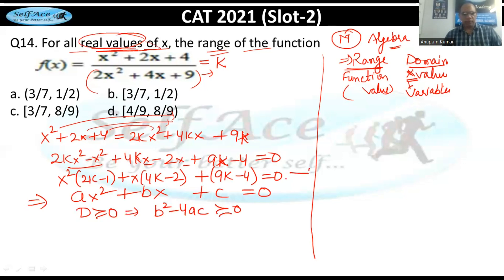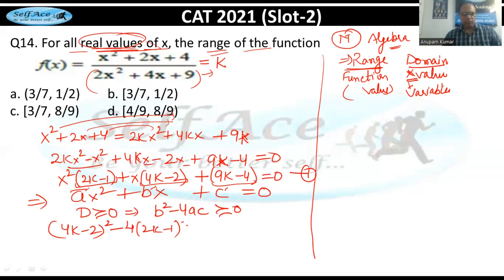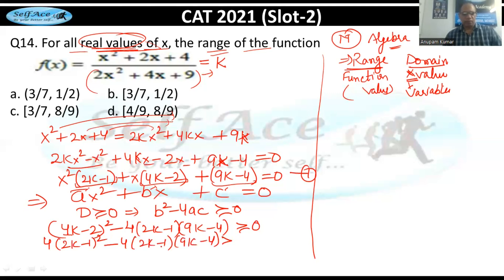Computing D: (4k−2)² − 4(2k−1)(9k−4) ≥ 0. Taking 2 common from the first term gives 4(2k−1)² − 4(2k−1)(9k−4) ≥ 0. Factoring out 4(2k−1): 4(2k−1)[(2k−1) − (9k−4)] ≥ 0.